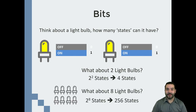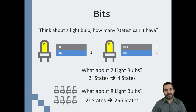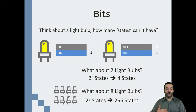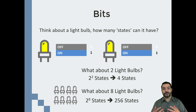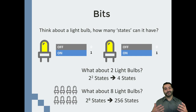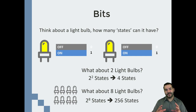So what would happen if I went with eight light bulbs? What would happen is I would go from two states to four states, and then when I get to a third light bulb I'd get eight states. Continuing with that: four light bulbs gives me 16, then 32, then 64. Eventually I get to 256 possible combinations of ones and zeros.